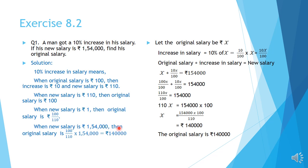This is the original salary. The same answer we can get using the formula method. Let the original salary be x. Increase in salary equals 10% of x, which is 10x by 100. Then x plus 10x by 100 equals Rs. 1,54,000. Taking LCM: 100x by 100 plus 10x by 100 equals 1,54,000, so 110x by 100 equals 1,54,000. Therefore 110x equals 1,54,000 into 100, and x equals 1,40,000.